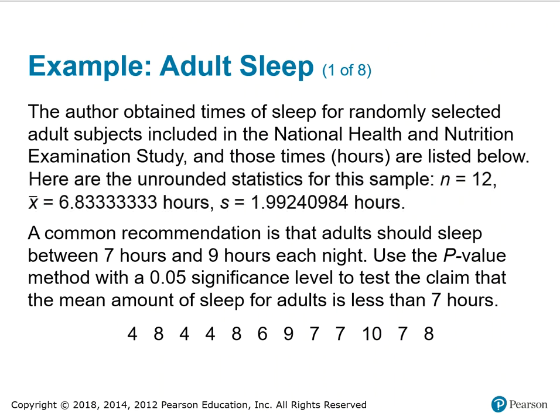Here's an example: Adult sleep. The author obtained sleep times for randomly selected adult subjects from the National Health and Nutrition Examinations study. The unrounded statistics for the sample are: n equals 12, x-bar equals 6.8 repeating hours, and s equals 1.9924984 hours. A common recommendation is that adults sleep between 7 and 9 hours each night. Use the p-value method with a 0.05 significance level to test the claim that the mean amount of sleep for adults is less than 7 hours.